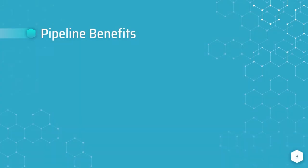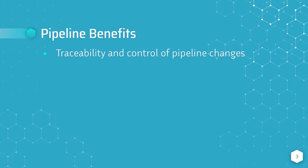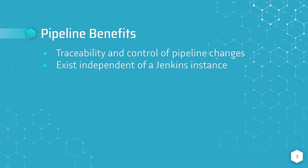So what are some of the benefits of using a Jenkins pipeline? If we check in the Jenkins pipeline code contained within the Jenkins file into version control, we immediately get the benefit of traceability and control over changes made to the pipeline. The other benefit of version controlling the Jenkins file is that the pipeline exists independent of a Jenkins server, which means if the Jenkins server was accidentally destroyed, the pipelines would not be destroyed since they're managed in a source code management server.